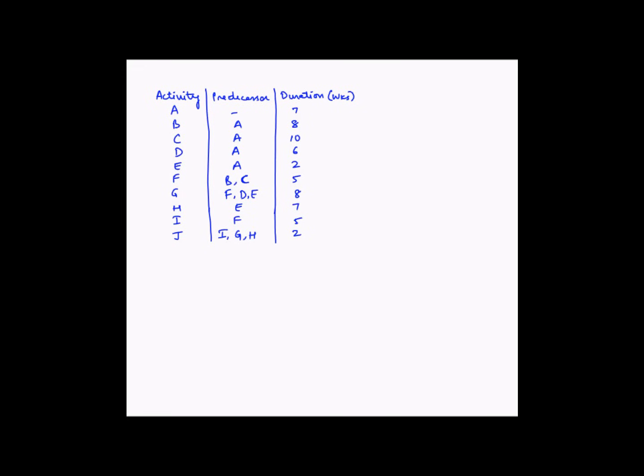Let us look at another example of how to draw a network diagram. We have been given activities from A through J, along with the predecessors for each of these activities and the times that each of these activities would take in terms of weeks.